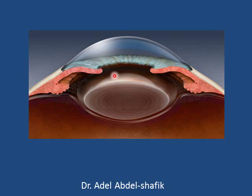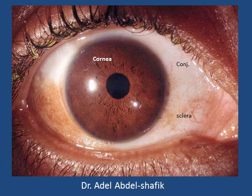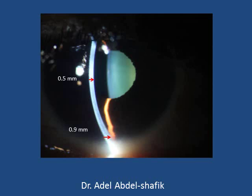The cornea is the transparent part of the outer coat of the eye. It is continuous with the sclera at the limbus. Through the cornea we can see the iris and the pupil. Here is the cornea, this is the limbus, and here we can see the sclera covered by the transparent conjunctiva. This is the diameter of the cornea.